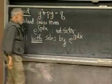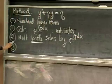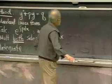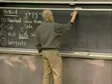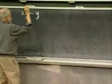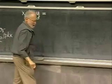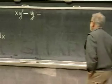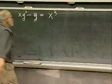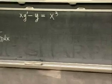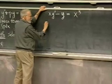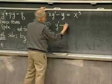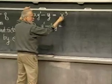Let's take a simple example: xy prime minus y equals x cubed. The first thing to do: put it in standard form. Dividing by x gives Y prime minus (1/x)·Y equals x squared. There are two standard errors — let's do the work first and then talk about mistakes.